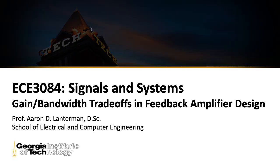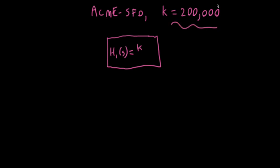Suppose you're in the market for an amplifier, and you found that you can get a really good deal on an amplifier from the Acme Amplifier Corporation called the Acme SFO. The people who make the Acme SFO say that they'll give you an amplifier with an amazing gain, a gain of K equals 200,000. So that's a whole ton of gain. That's awesome. But there's a catch. The amplifier has limited bandwidth.